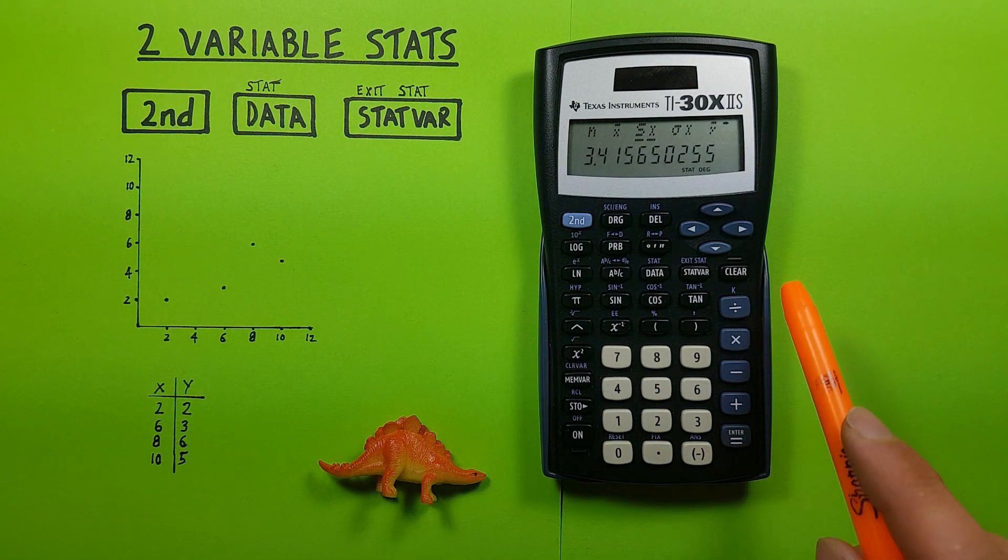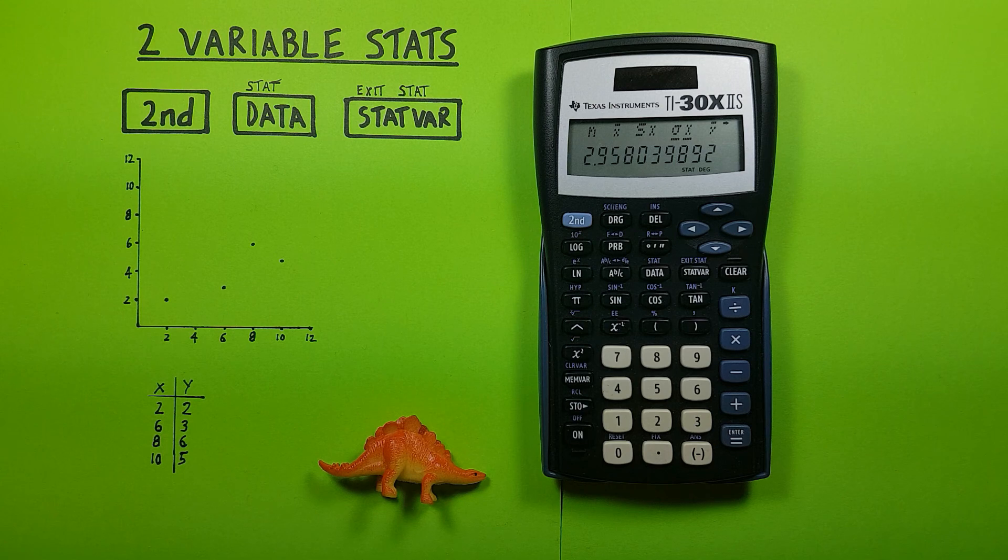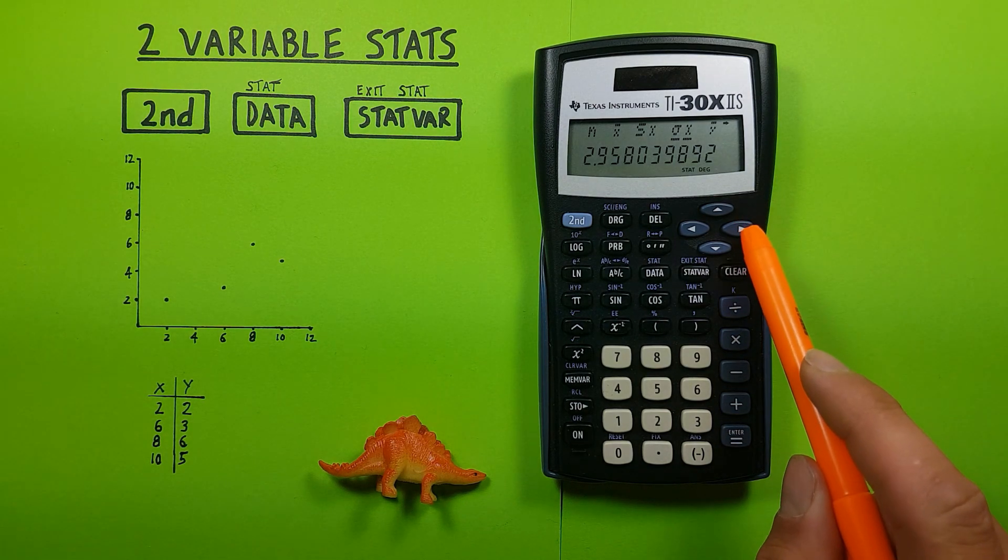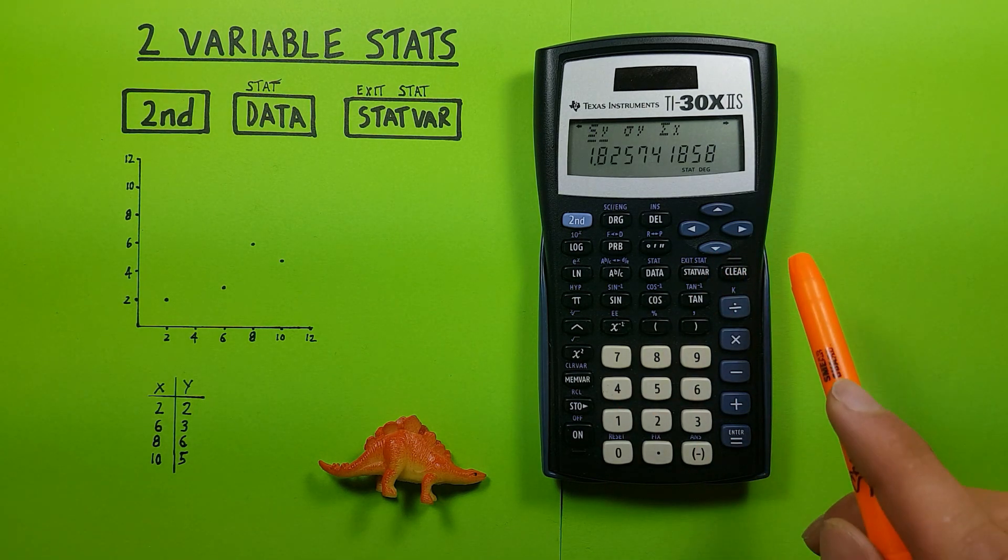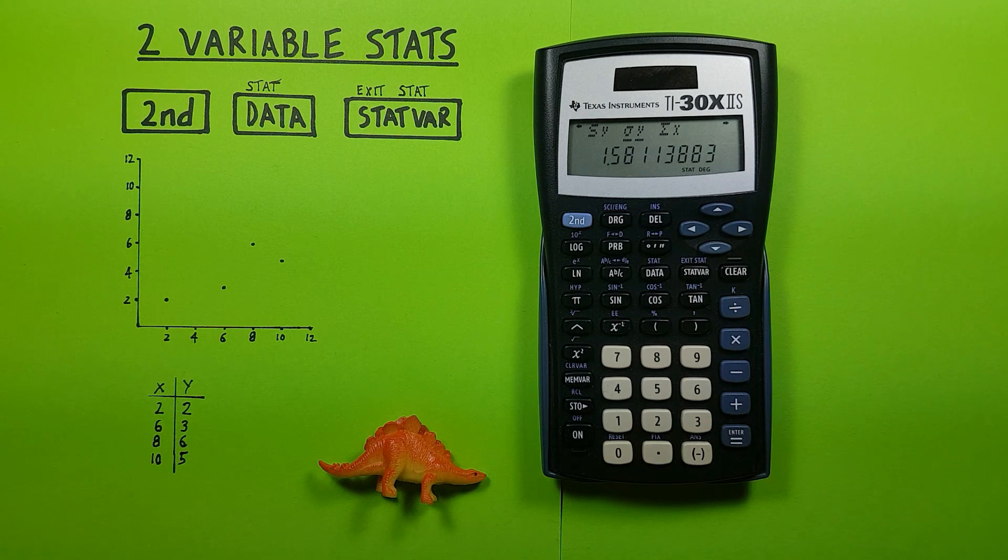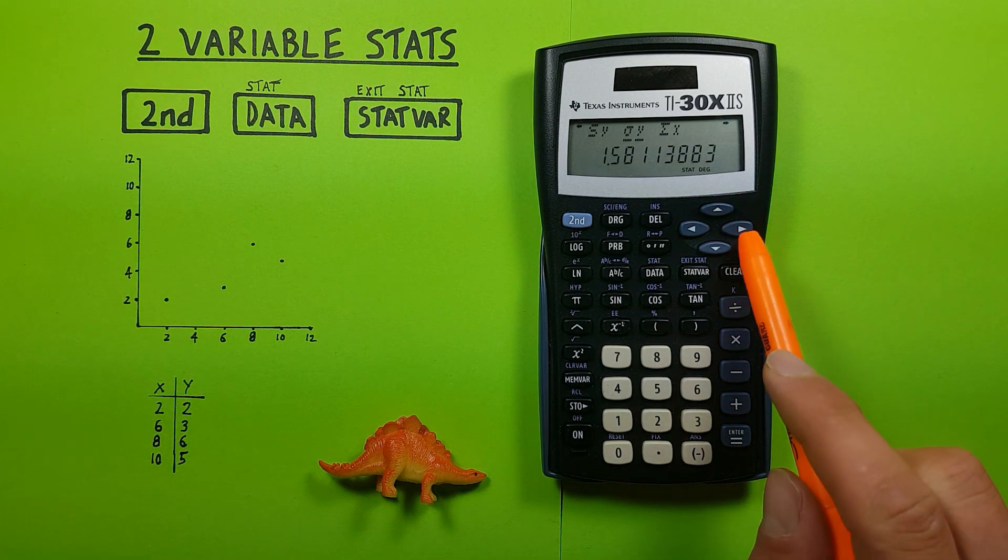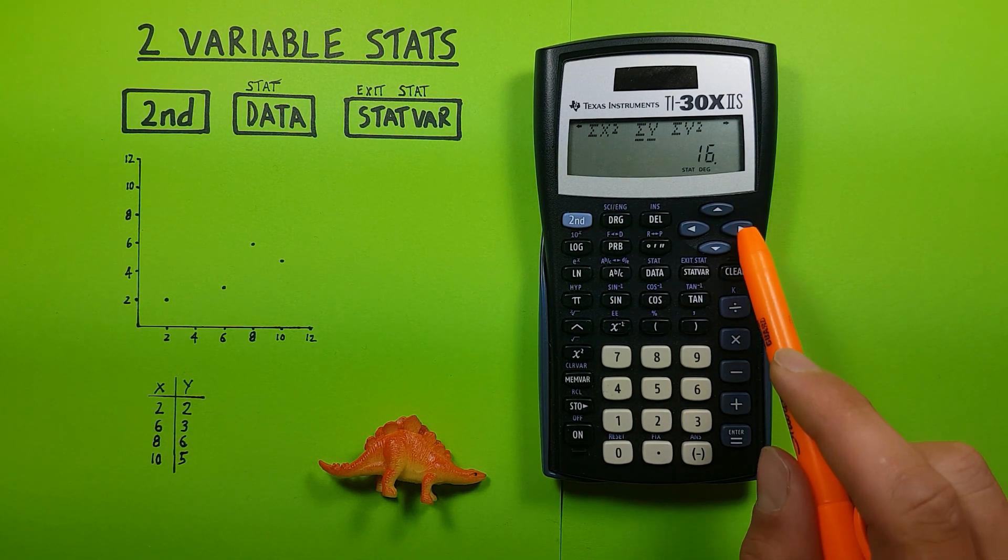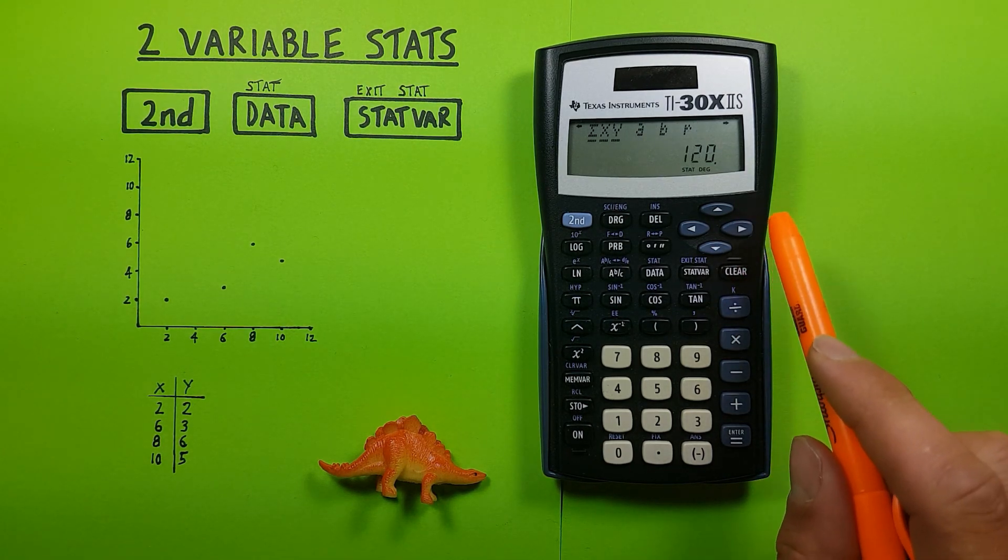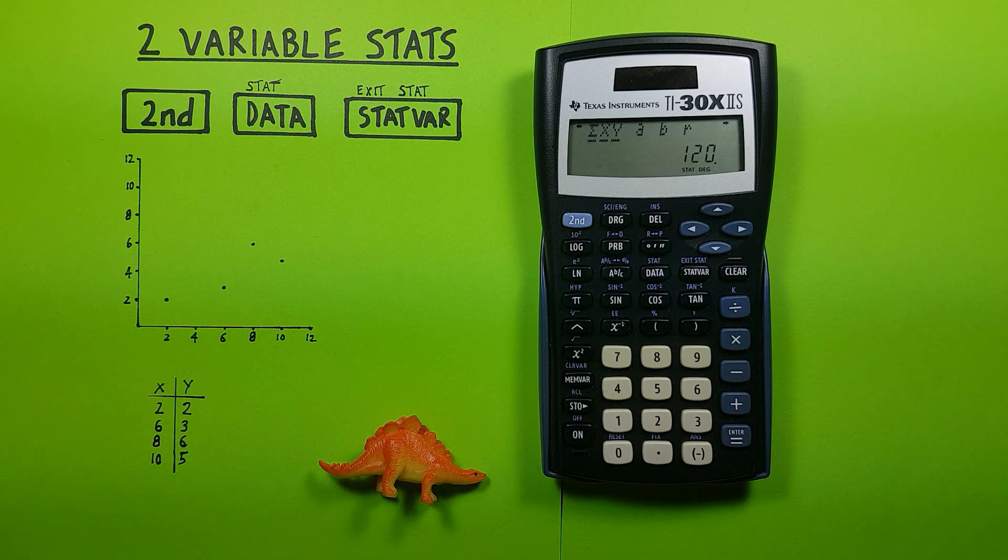Our sample standard deviations, our population standard deviations of x's, then our mean y, sample standard deviation, population standard deviation, sums of x's, sums of x squareds, sums of y's, sums of y squareds, and then sum of x and y together.